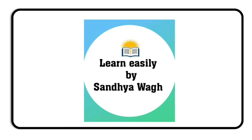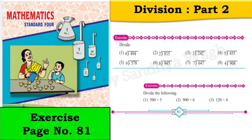Hello dear students, today we are going to learn and understand division, part 2, from the mathematics textbook standard 4. We have studied how to divide a two-digit number and a three-digit number by a one-digit number and solve exercises given on page number 79 and 80. Do watch those videos to understand this topic better — links are given in the description box below. Now in today's video we will solve the exercise given on page number 81.